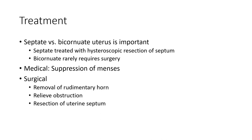Treatment: distinguishing septate from bicornuate uterus is important. Septate uterus is treated with hysteroscopic resection of the septum. Bicornuate uterus rarely requires surgery. Management includes medical suppression of menses, surgical removal of a rudimentary horn, relief of obstruction, and resection of the uterine septum or horn.